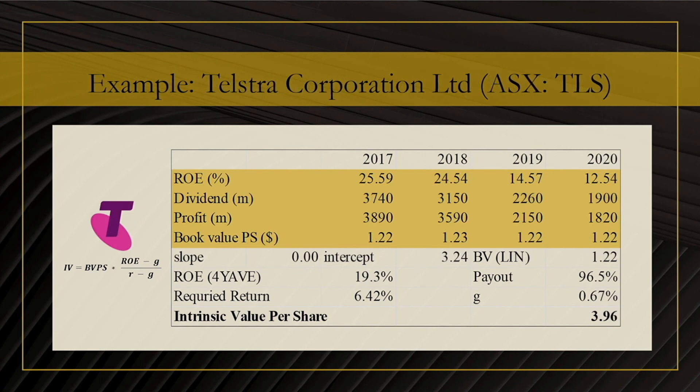Finally, we have Telstra. This time, G is not zero, G is not larger than R, and G and R are not close to one another — so all of the problems we have seen before are not present here. As a result, we see that the valuation is actually very accurate. This computation estimates the share price to be $3.96, just slightly above the current share price of $3.74.